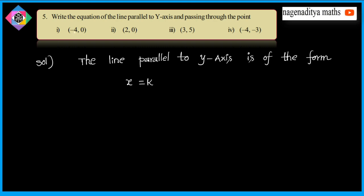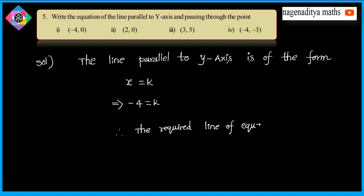The y-axis value is -4, which implies -4 is equal to K, so the K-value is -4. Therefore, the required line equation is x is equal to -4.